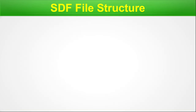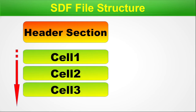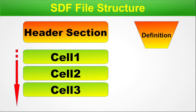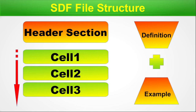SDF file structure: the SDF contains design-specific data only. It is organized with a header section at the top, followed by the cells — cell1, cell2, cell3 — all cells picked up from the standard cell library for this particular design. We will explain all of these with definitions and examples in upcoming slides.